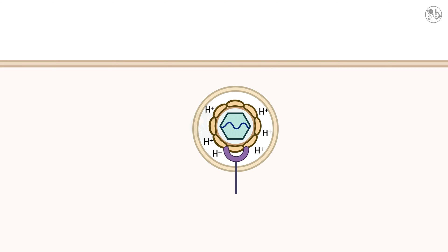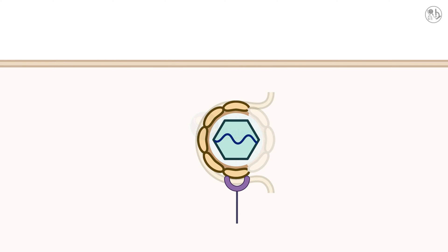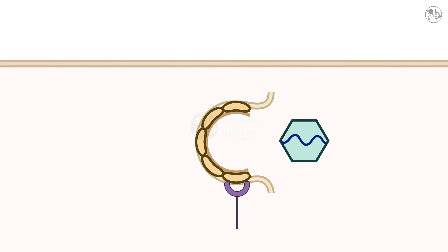The vesicle becomes acidic, which triggers a change in the shape of the E protein. This causes the fusion of the viral envelope with the vesicle membrane, releasing the RNA into the cell.